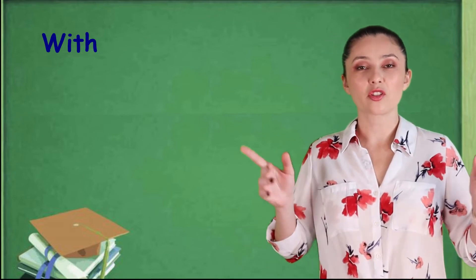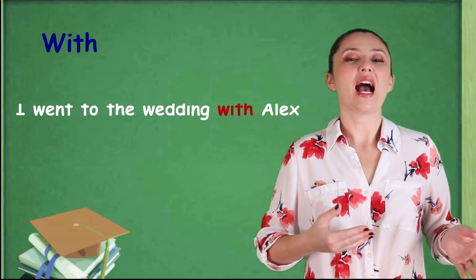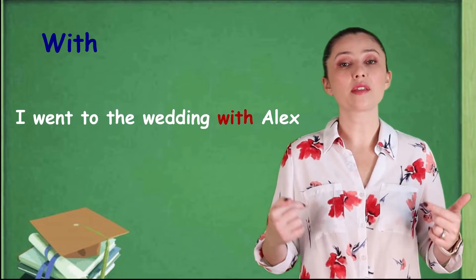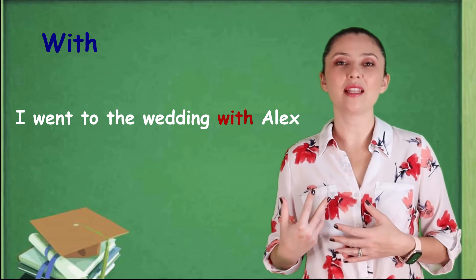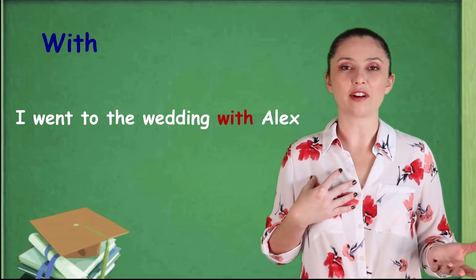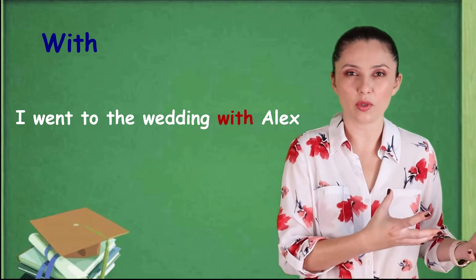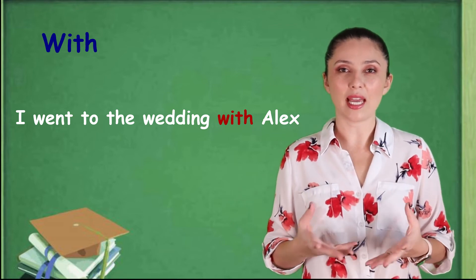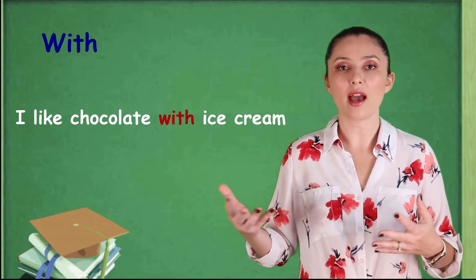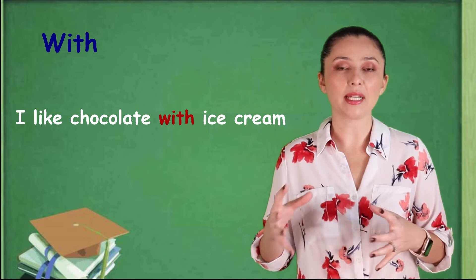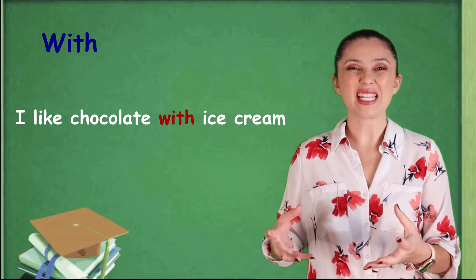Now, let's move on to the preposition with our last preposition. So, the first category I want to talk about. When we talk about company. Accompanying someone or something. So, let's say, I went to the wedding with Alex. So, me and Alex, we went together and he was my companion. He was the person who went with me. So, in this case, I can say with. Or also, I like chocolate with ice cream. So, one is accompanying the other. So, I can say with.